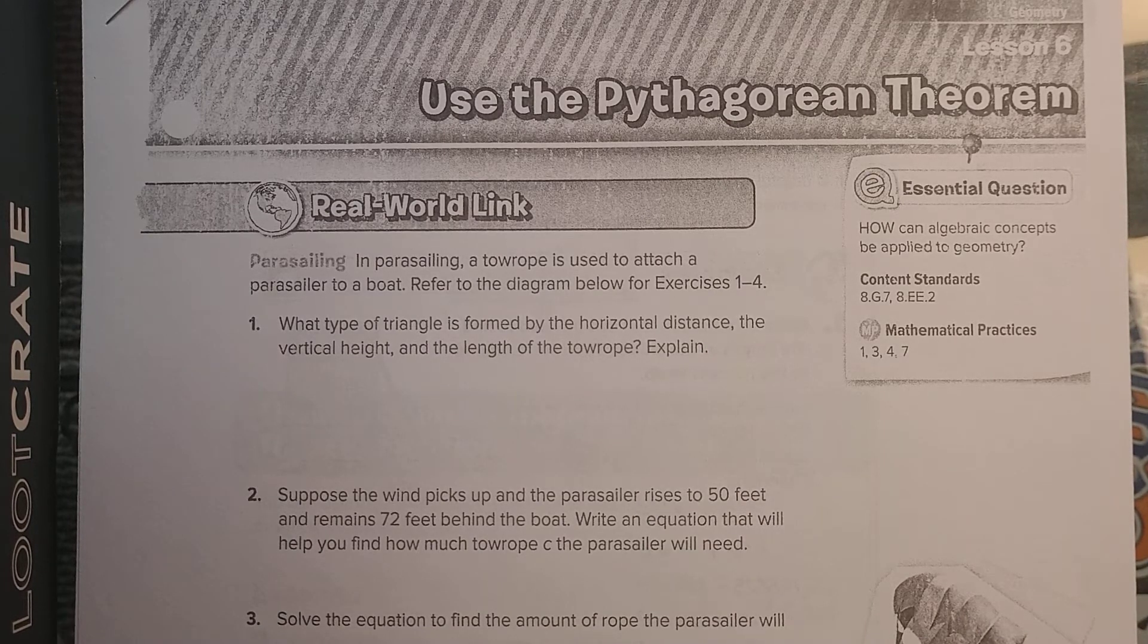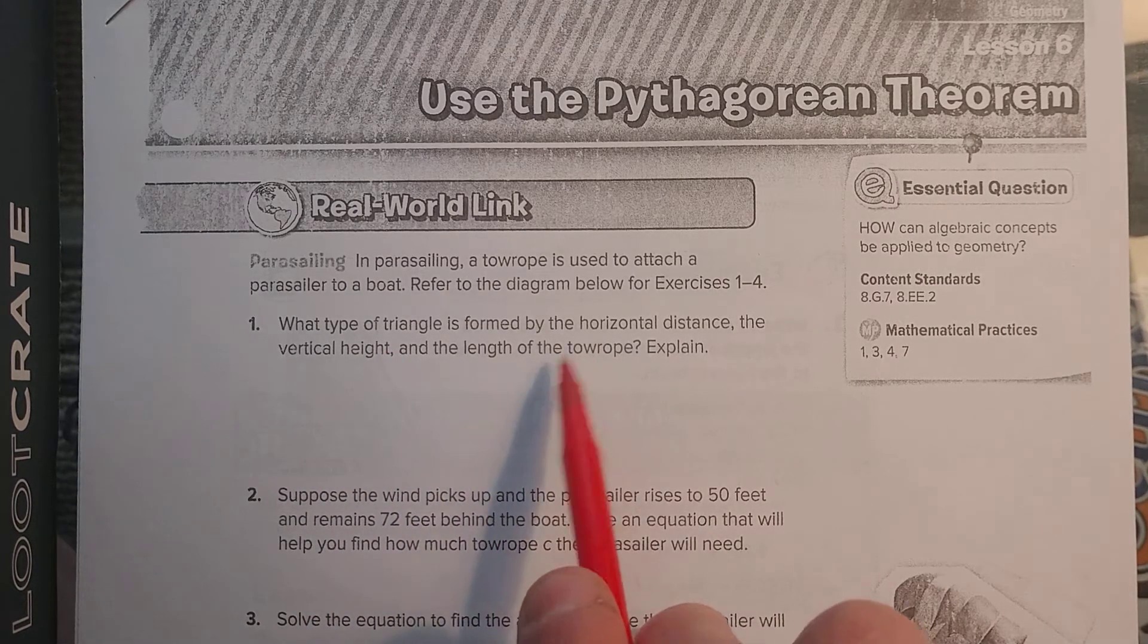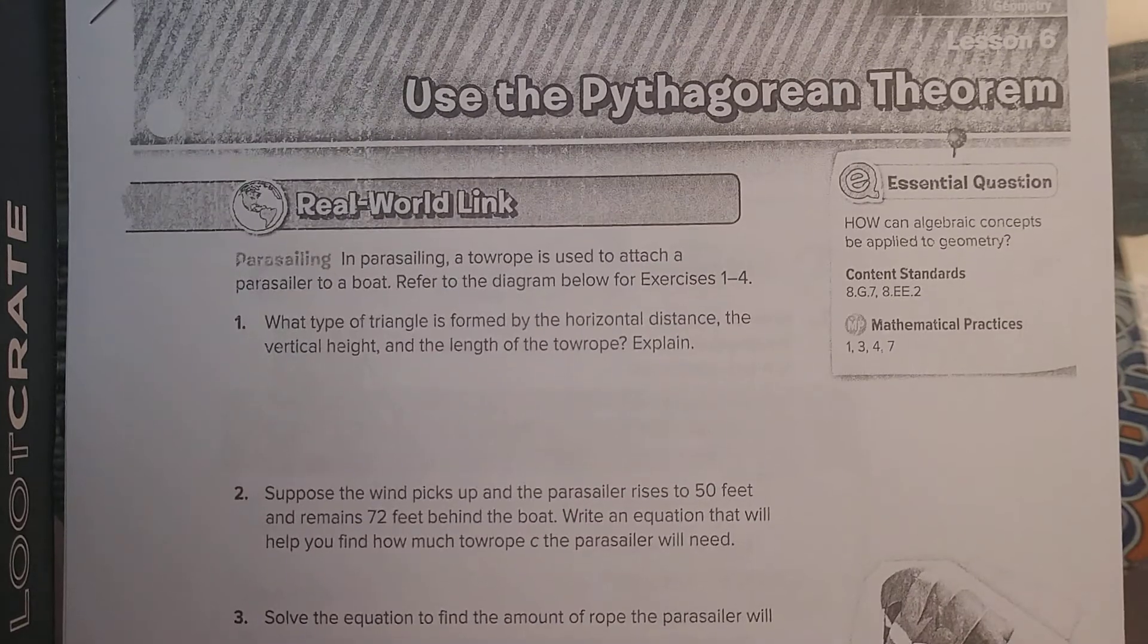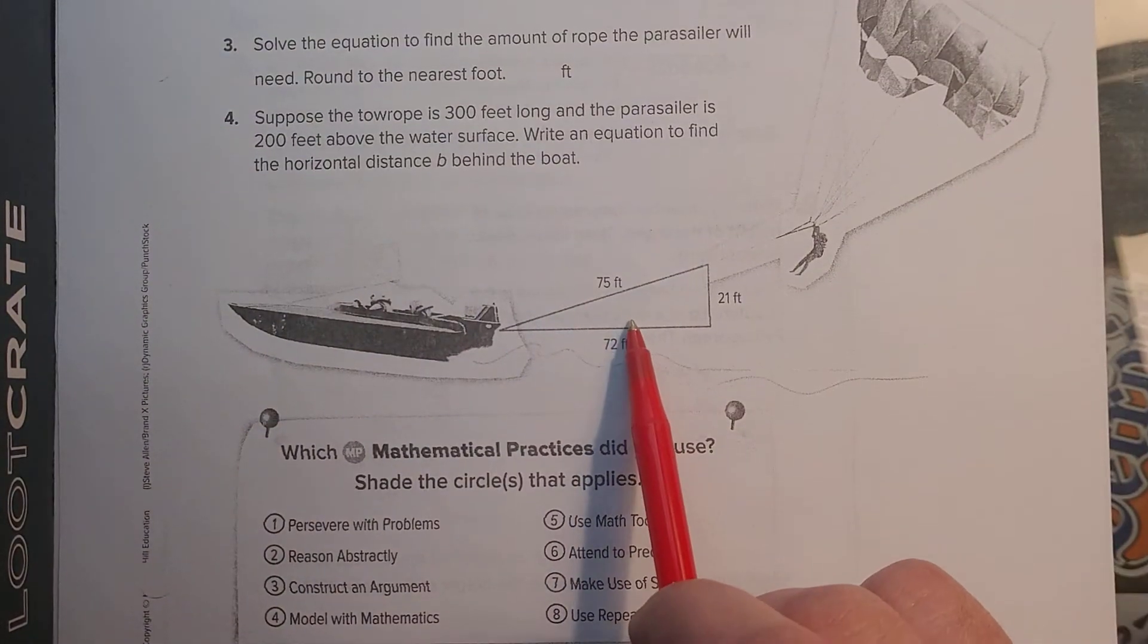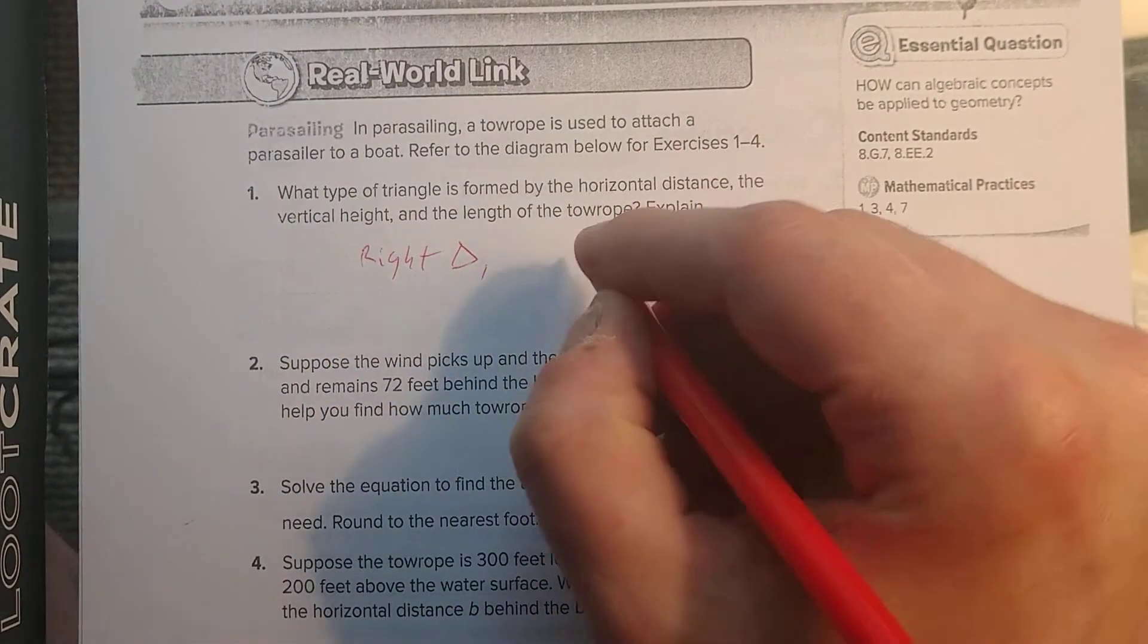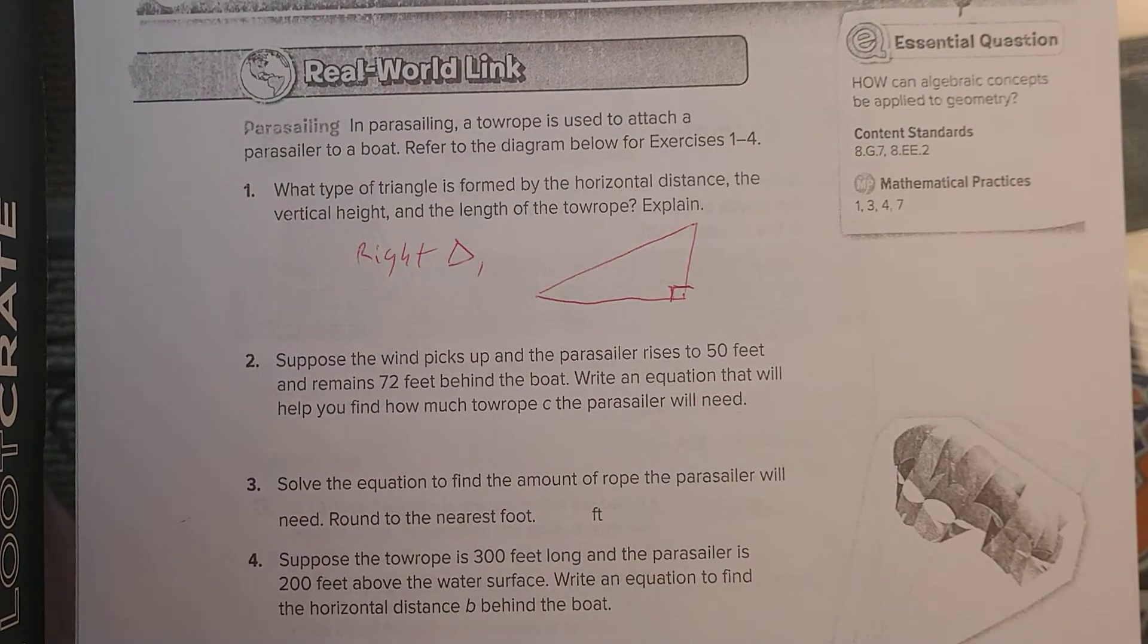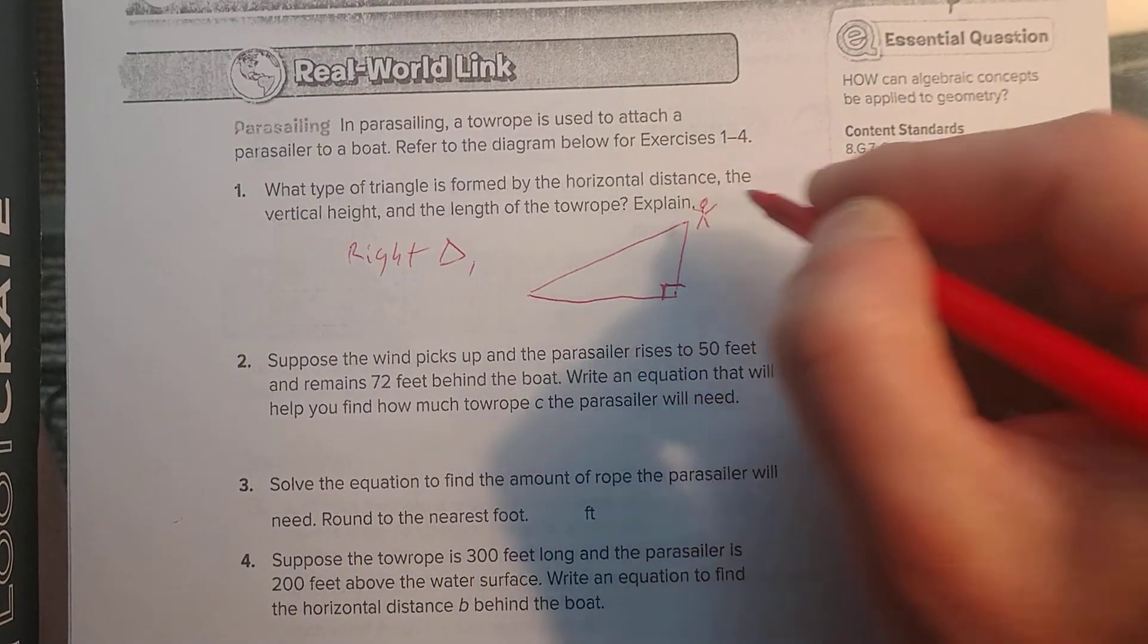So we see a lot of right triangles a lot of times whenever humans are involved. It does occur in nature, but just not as much. What type of triangle is formed by the horizontal distance, the vertical height, and the length of the tow rope? So in parasailing, a tow rope is used to attach a parasail. Okay, so that's what we're looking at down here. Cool, a little parasail. What type of triangle is formed? What kind of triangle is this? It is a right triangle. And that's because when you're being towed, this is a 90 degree, where you are above the water changes as you do, and you're always at 90 degrees, no matter where you're at.